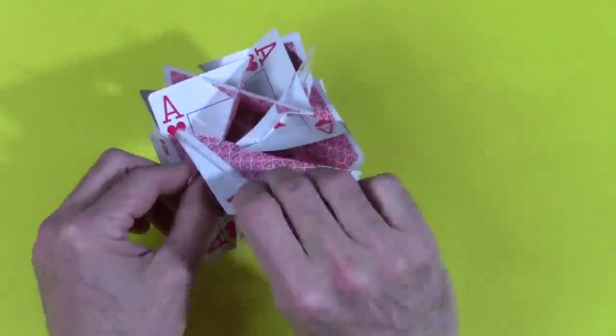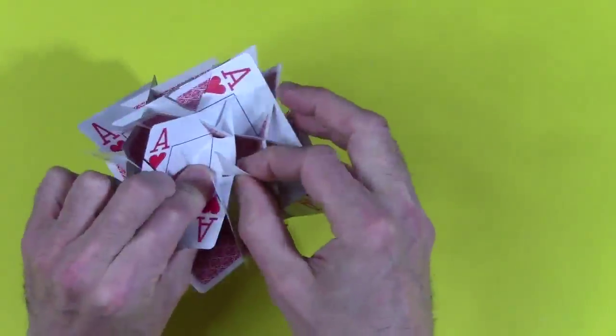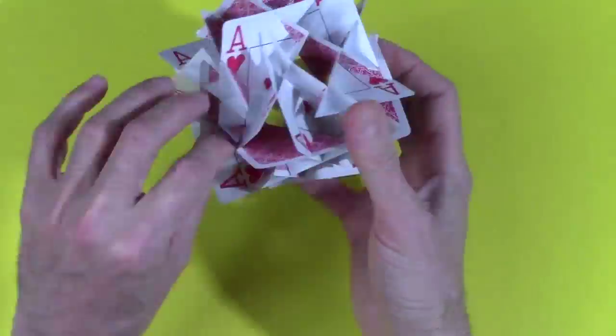As you work, try not to bend the cards too much. It takes some care to get the last piece in. It has to make four connections. But when you're done, you'll have a cube with 14 tunnels.